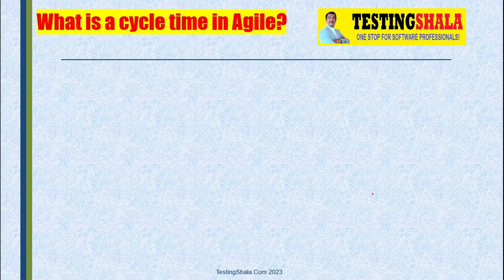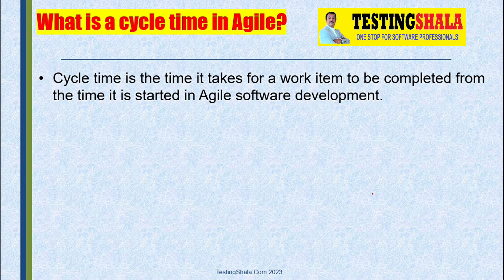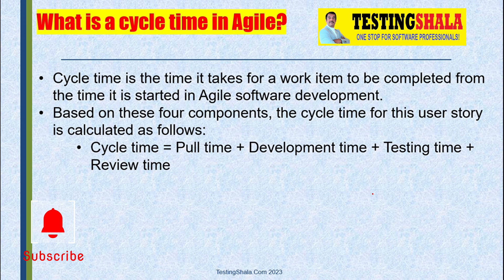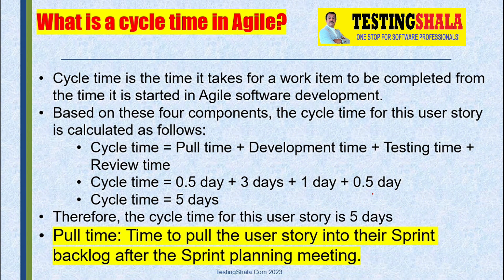What is cycle time in Agile? Cycle time is another measure used in Agile. It is the time it takes for a work item to be completed from the time it is started. We can think of it as flow time — the time to pull the user story from the sprint backlog after the sprint planning meeting, plus development time, testing time, and review time as part of the overall effort to complete that work item.